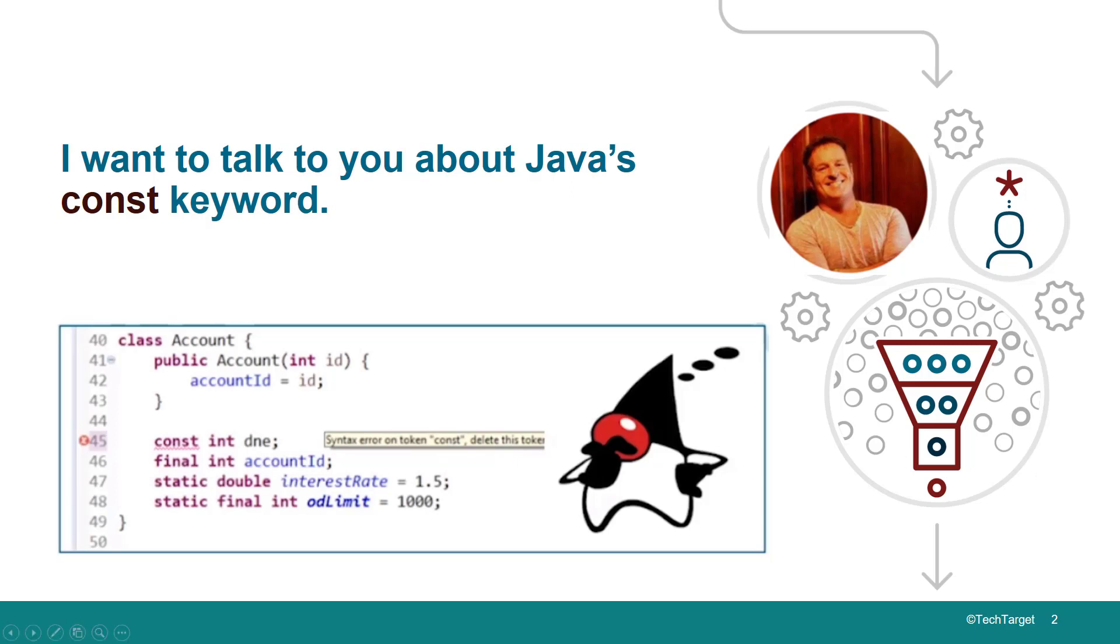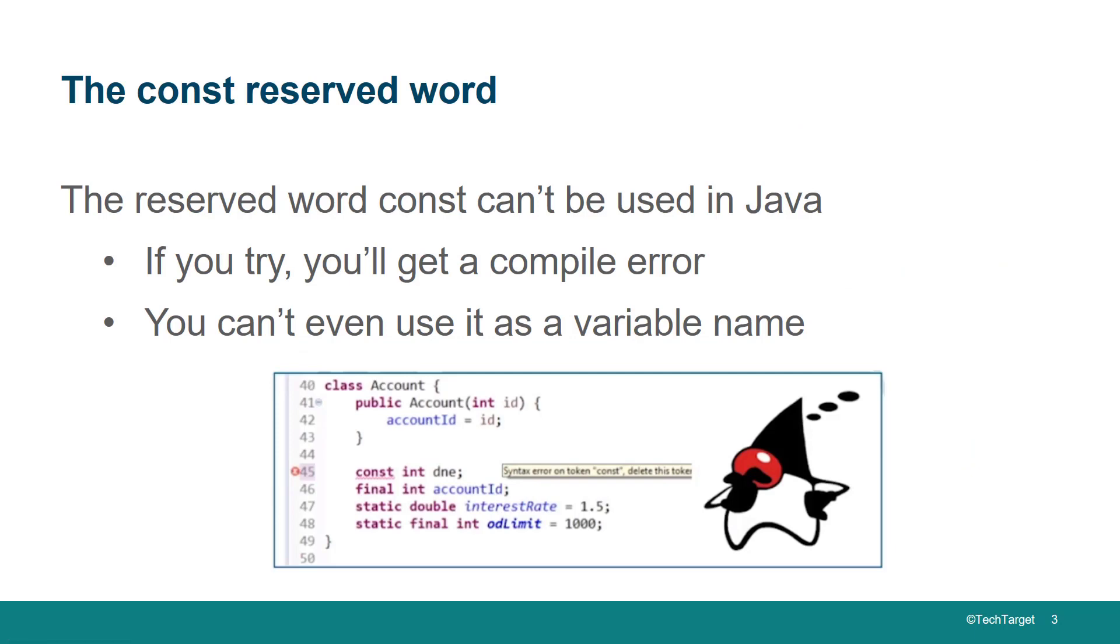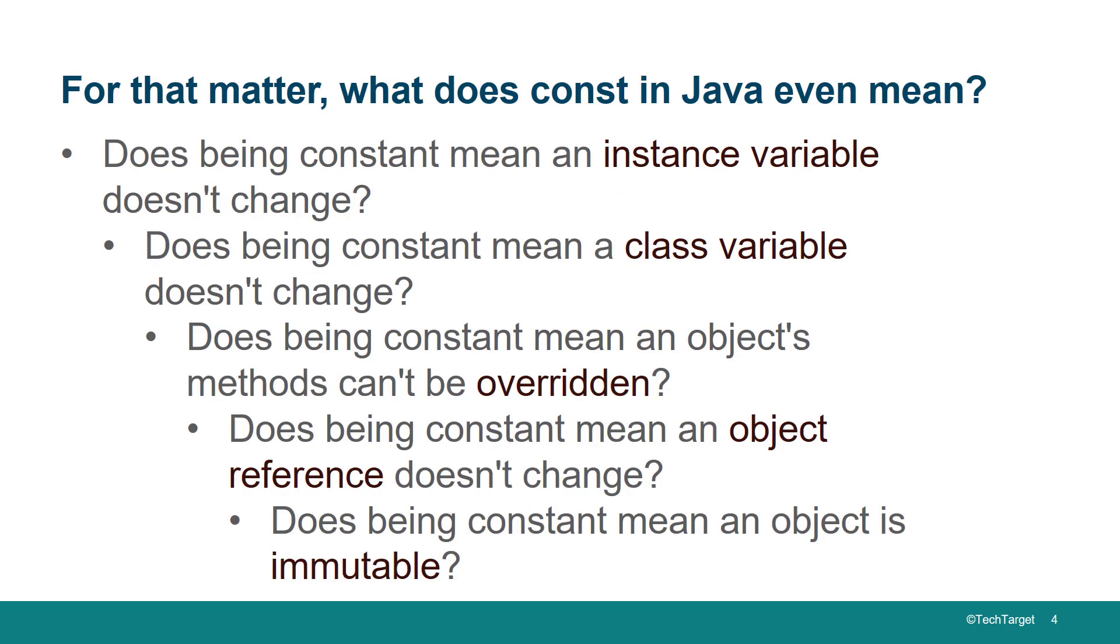Why is that? I guess it comes down to what does the word const even mean? We both know it means to make something constant, but what does constant mean in Java? Maybe you've got a constant instance variable that's a primitive type and that can't change. That's pretty basic.